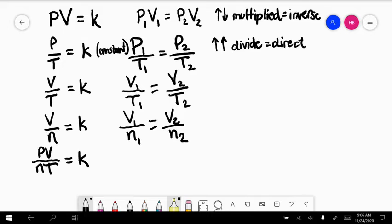This special constant here is called R, which is the ideal gas law constant. And that's PV over nT.